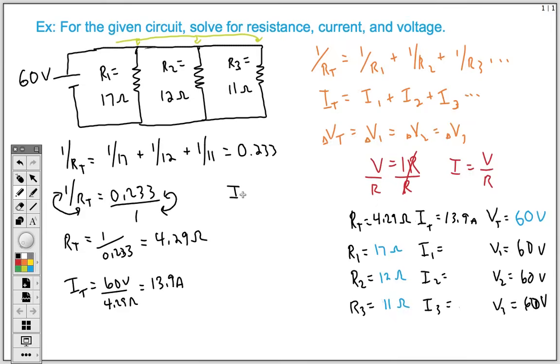Now we've got to solve for I1, which is going to be 60 volts divided by R1, which is 17 ohms. 60 divided by 17 gives us 3.5 amps. Now my I2, same method, 60 volts divided by 12 ohms, we get 5 amps.